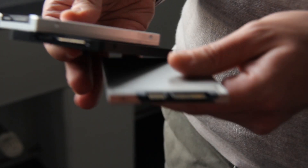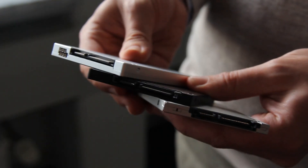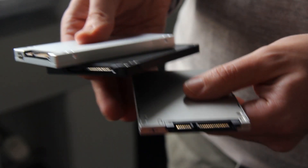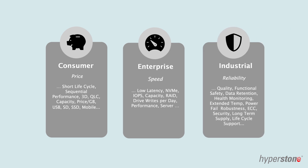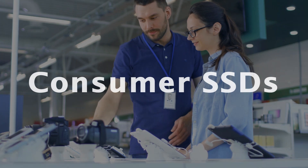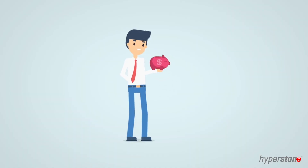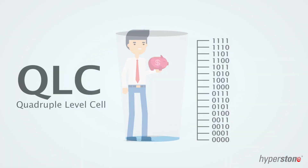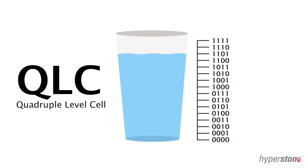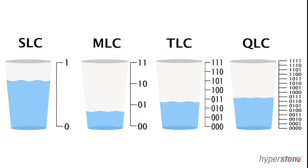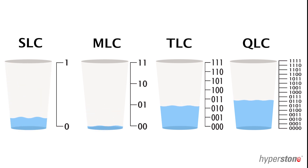SSDs are everywhere and they are growing in popularity, but here's the thing: SSDs are designed to support a market, and that's why there's such a difference between consumer, enterprise, and industrial SSDs. Consumer SSDs are designed with cost in mind. They have decent sequential performance which lasts likely less time than this video, and are usually based on cheaper QLC flash, which has fewer program-erase cycles and a lesser life expectancy. If you don't yet know the difference between SLC, MLC, TLC, and QLC flash technology, we've made a video on it — links in the description.